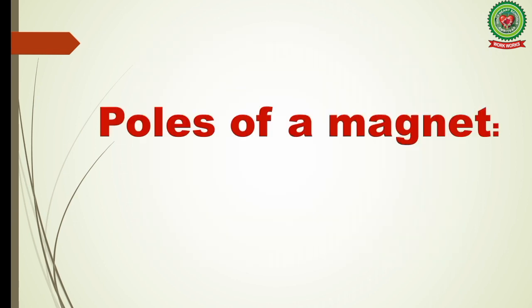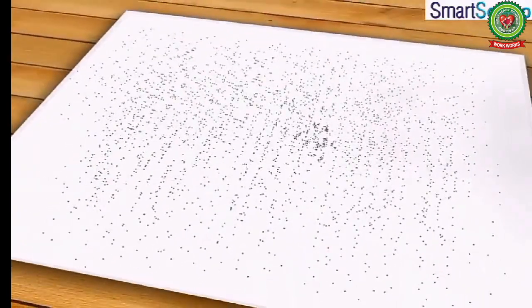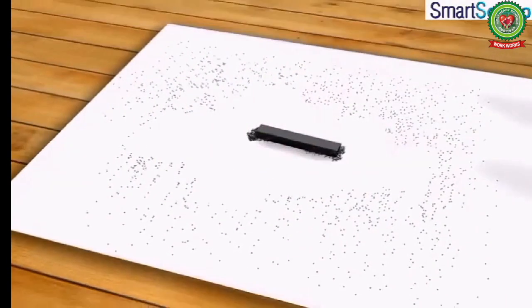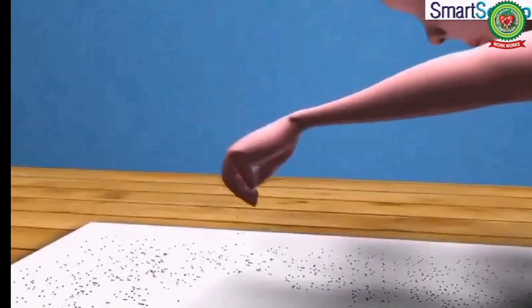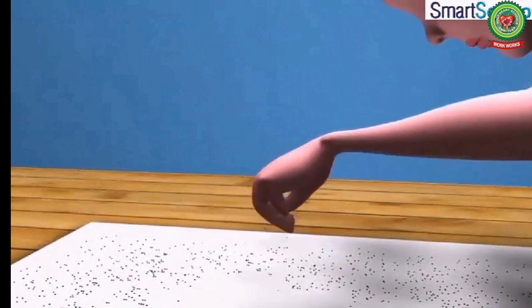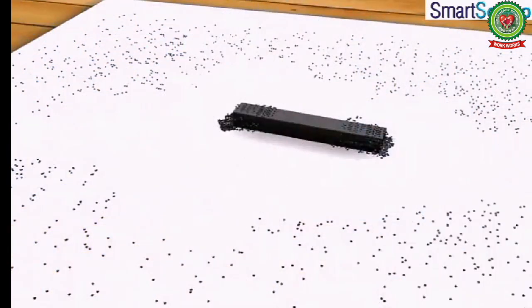The next topic is poles of a magnet. Let's understand this with the help of an activity. Spread some iron filings or iron powder on a white cardboard sheet, then place a bar magnet at the center of the sheet, sprinkle some more iron filings on and around the magnet, and tap the board 2 to 3 times. What will you observe?